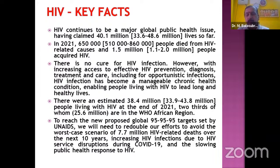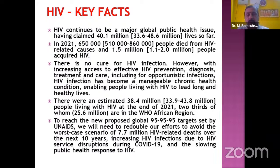The proposed global 95/95/95 target requires that 95% of people living with HIV be detected, 95% be put on antiretroviral therapy, and 95% maintain adherence to ART. We will need to redouble our efforts to avoid the worst case scenario of 7.7 million HIV-related deaths over the next 10 years. HIV services have been disrupted by COVID-19, slowing the public health response.